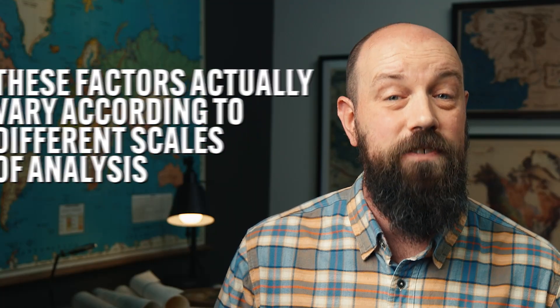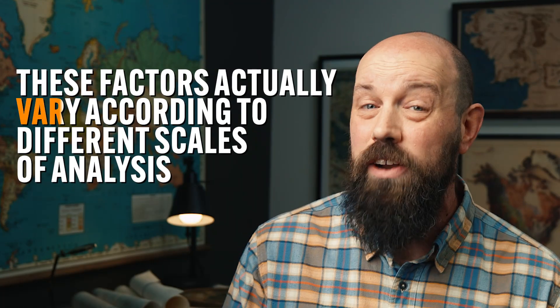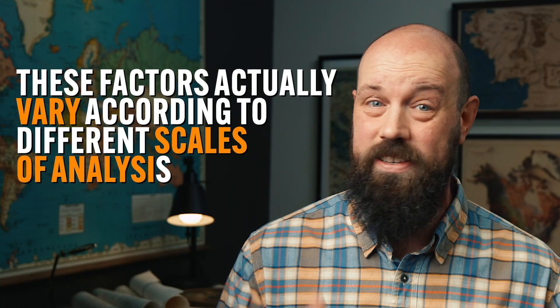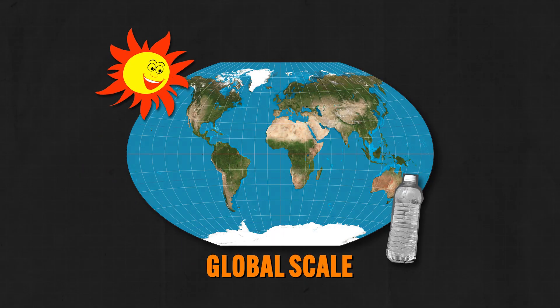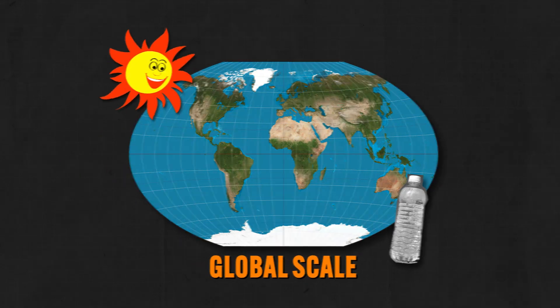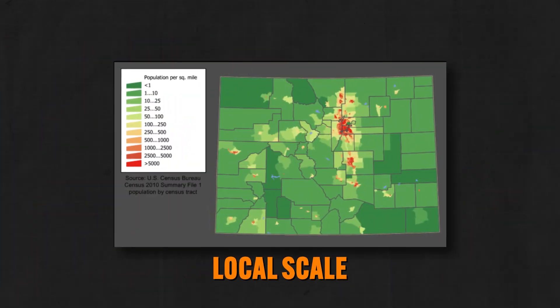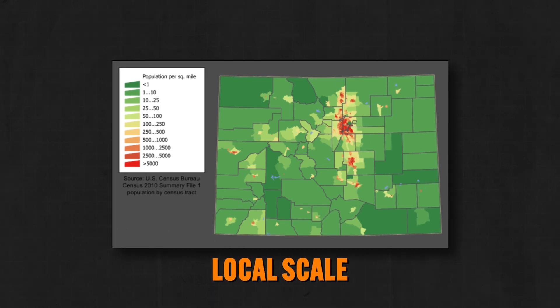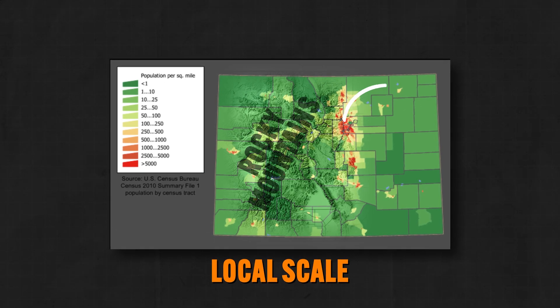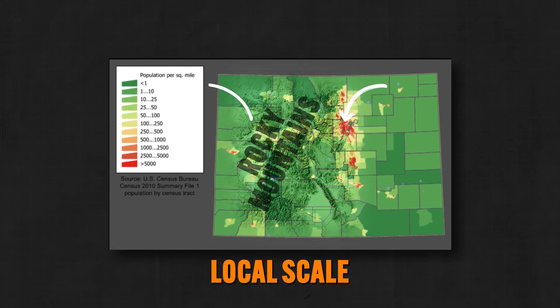Now that you understand the factors that influence population distribution, these factors actually vary according to different scales of analysis. At a global scale, it's usually climate and access to water that explains distribution. But at a more local scale, distribution might be better explained by landforms — like the Rocky Mountains, which push populations to settle in certain areas and not others.